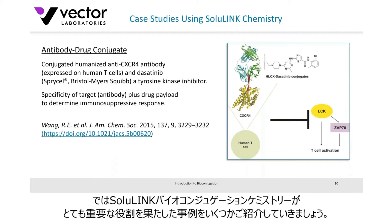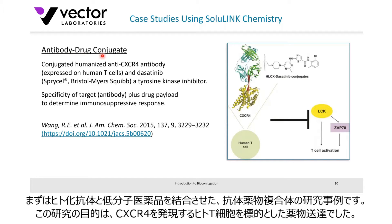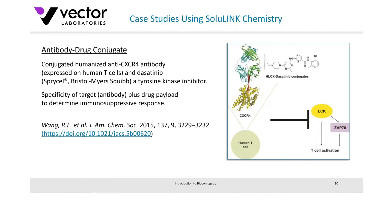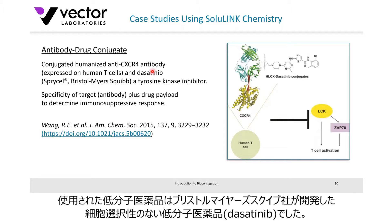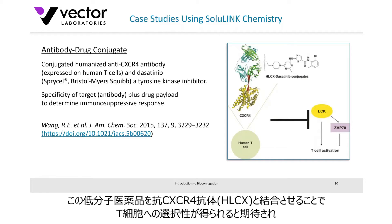Let me show you a couple of case studies where people are using bioconjugation and say it is vitally important in generating the results they want. The first case study is using an antibody drug conjugate. Some investigators conjugated a humanized antibody to a given drug. We've got a human T cell that expresses the antigen CXCR4. The investigators were trying to get this particular drug made by Bristol-Myers Squibb to be more selective in the way it targets its antigen and uptake in that cell type, as it's not particularly specific on its own.